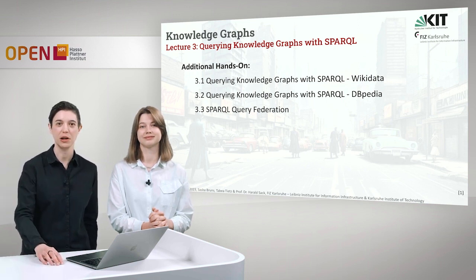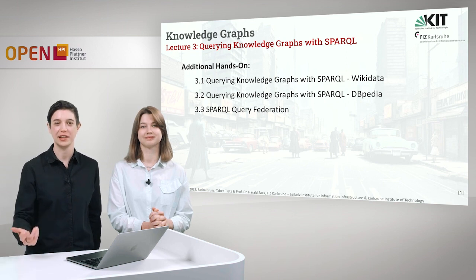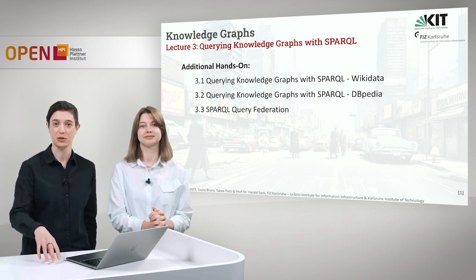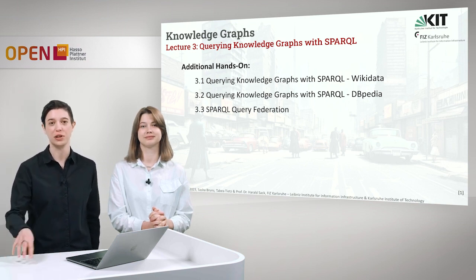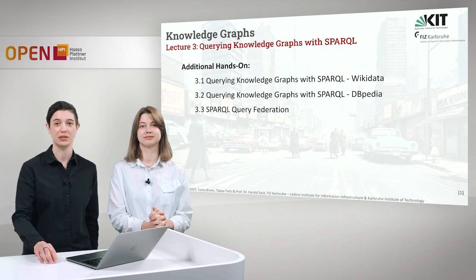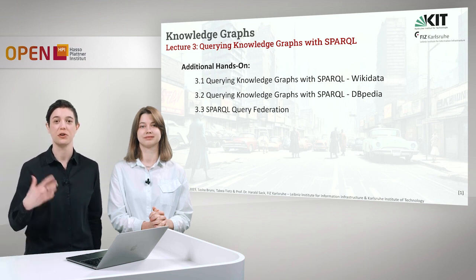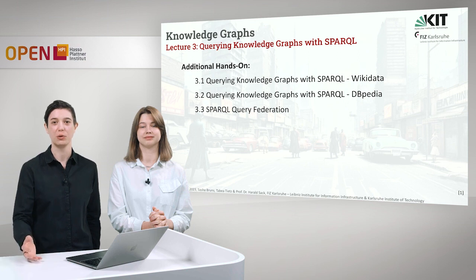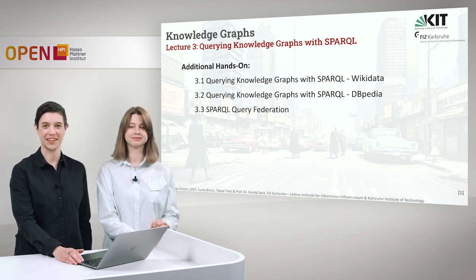We will also take a look at smaller ones. For example, there is a linked stage graph, which is a graph that contains data about performing arts, and we will see how we can connect this data to Wikidata. In another example, we will talk about the GND and see how we can connect that to Wikidata to further enrich the data we have in smaller and more domain-specific knowledge graphs.